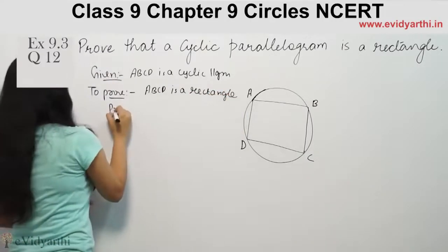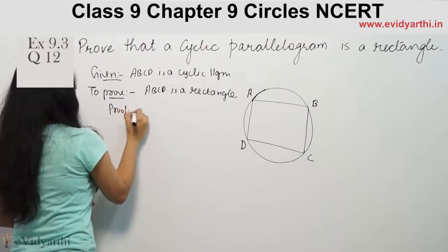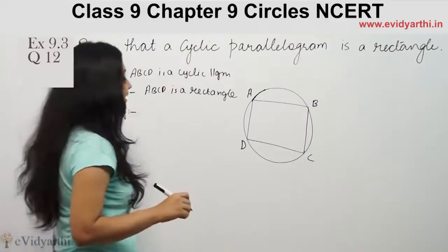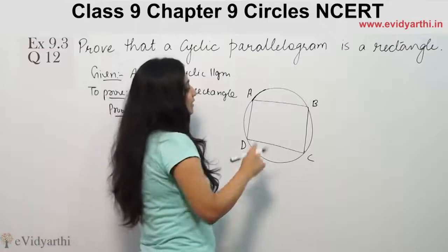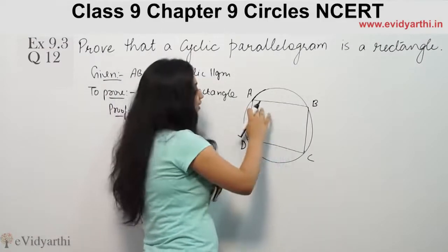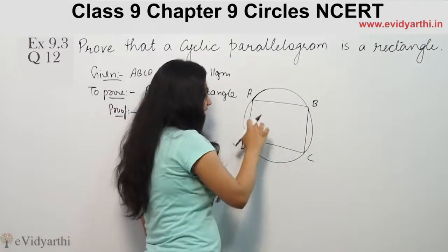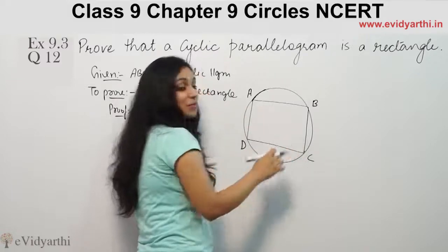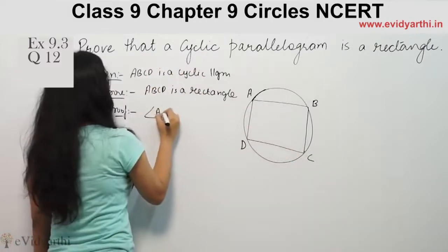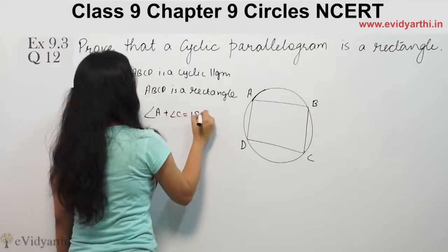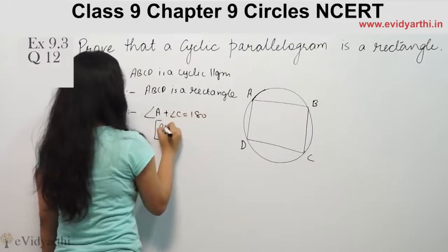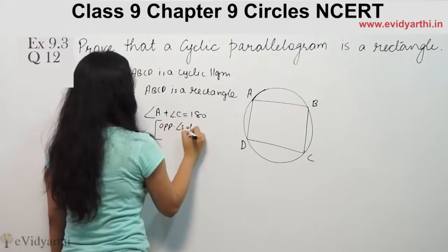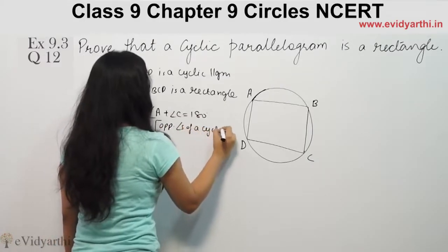Proof: We know that ABCD is cyclic. In a cyclic quadrilateral, the sum of opposite angles is 180 degrees. So, angle A plus angle C equals 180 degrees, as opposite angles of a cyclic quadrilateral sum to 180.